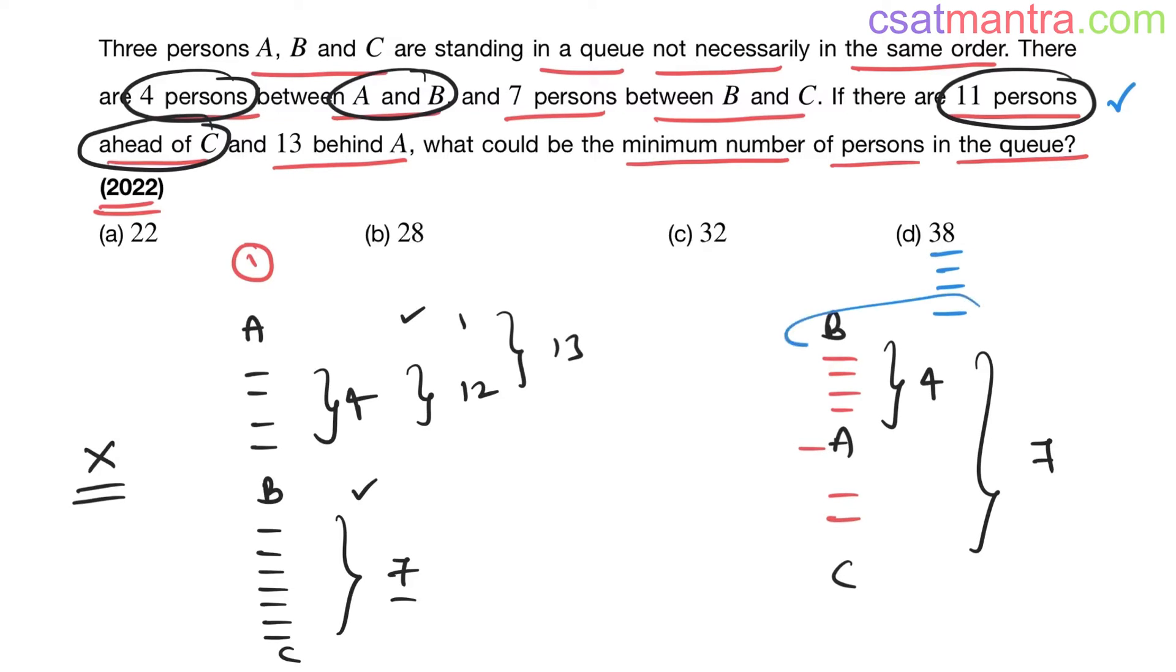Now if there are 11 persons ahead of C, between B and C you have seven, B is eight, after that three more. B is eight, three more 11. 13 behind A. This is A's position here, three, you'd be having 10 more, so three here, 10 here. All conditions satisfied.